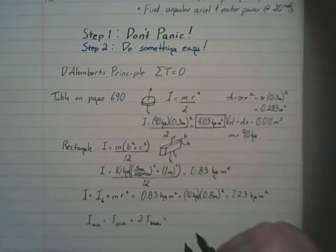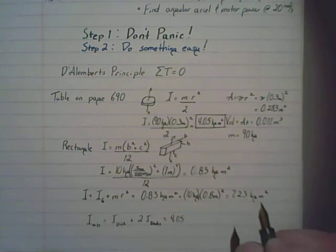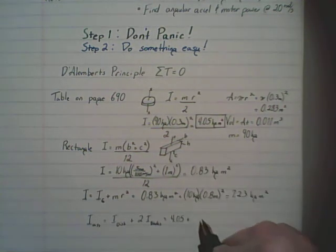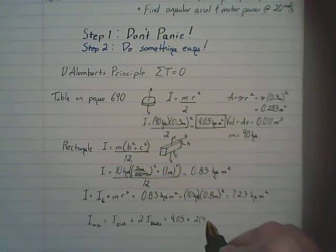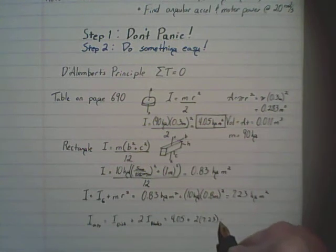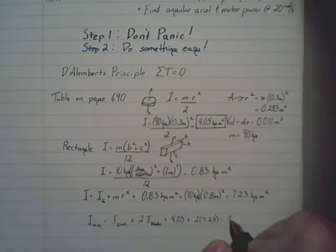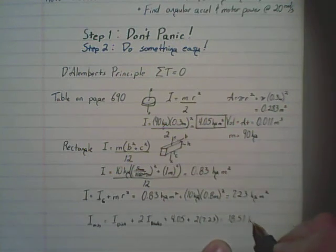So our total will be 4.05, I'll calculate it up here, plus two times 7.23, a total mass moment of inertia of 18.51 kilogram meter squared.